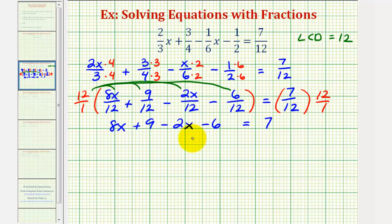And now we're going to solve this equation to find our solution. So we'll start by combining like terms. 8x and negative 2x are like terms, and so are 9 and negative 6. 8x minus 2x is 6x. 9 minus 6 is 3. Subtract 3 on both sides. So we have 6x equals 4, divide both sides by 6.